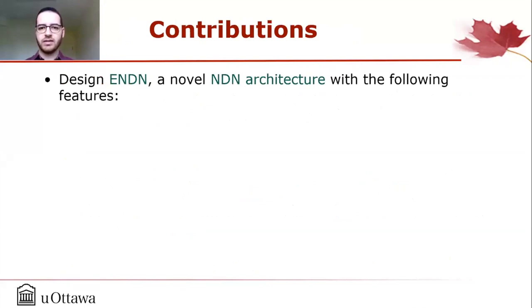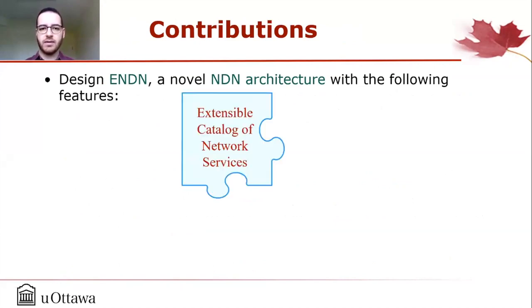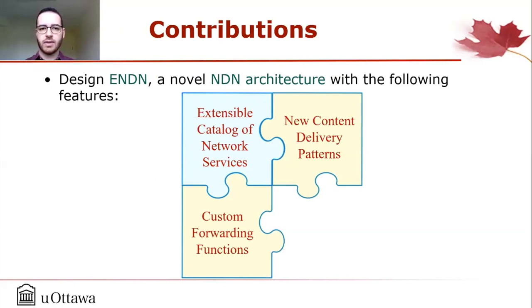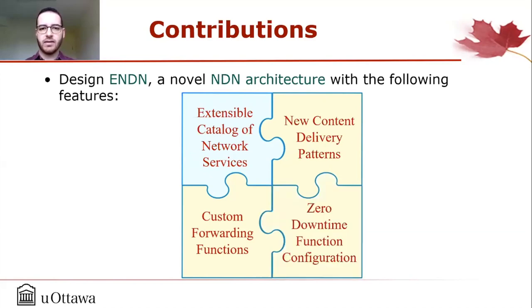The main objective of our work is to design a novel network architecture for building an application-centric network. Our proposed architecture is an enhanced NDN architecture called eNDN that offers: an extensible catalog of network services that applications can choose from; support for new content delivery patterns like publish-subscribe or push; programming of custom forwarding functions directly in the network layer; and the means to configure these functions in switches without any downtime.